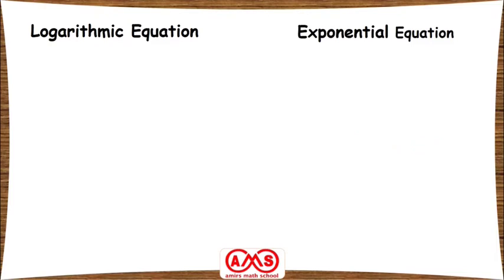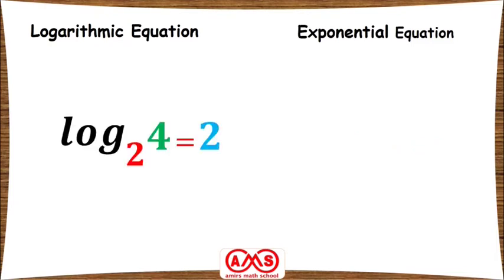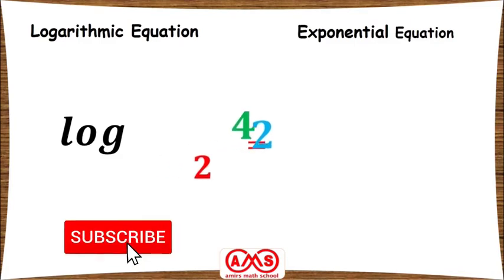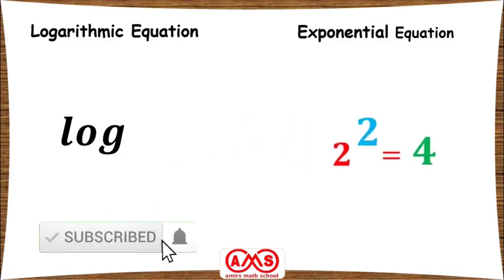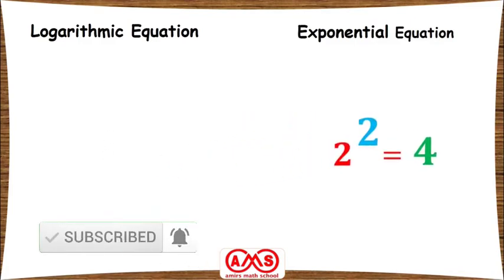Let's see one example: log base 2 of 4 equal to 2. If we want to write this logarithmic equation as an exponential equation, we write 2 squared equal to 4. This is the exponential form of the logarithmic equation log base 2 of 4 equal to 2.